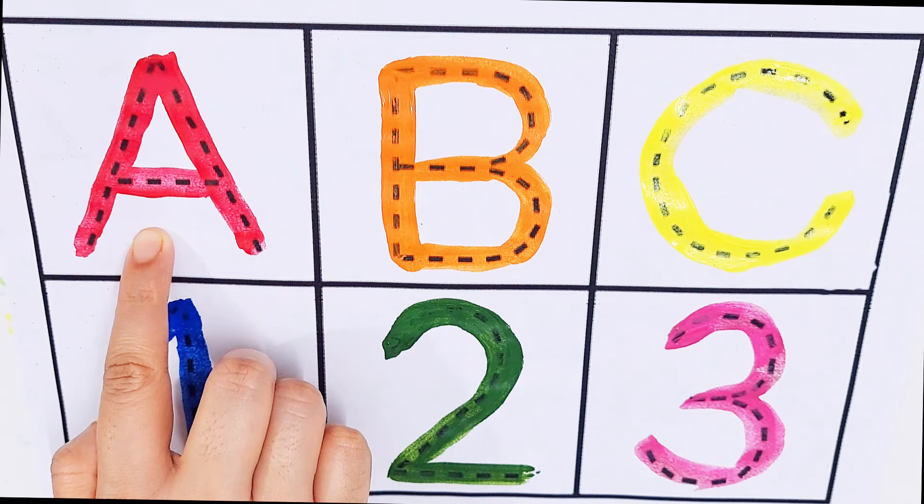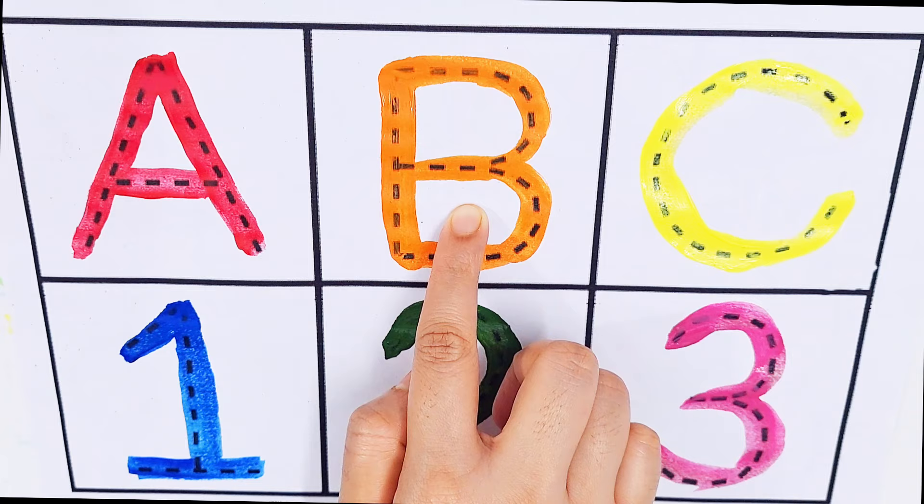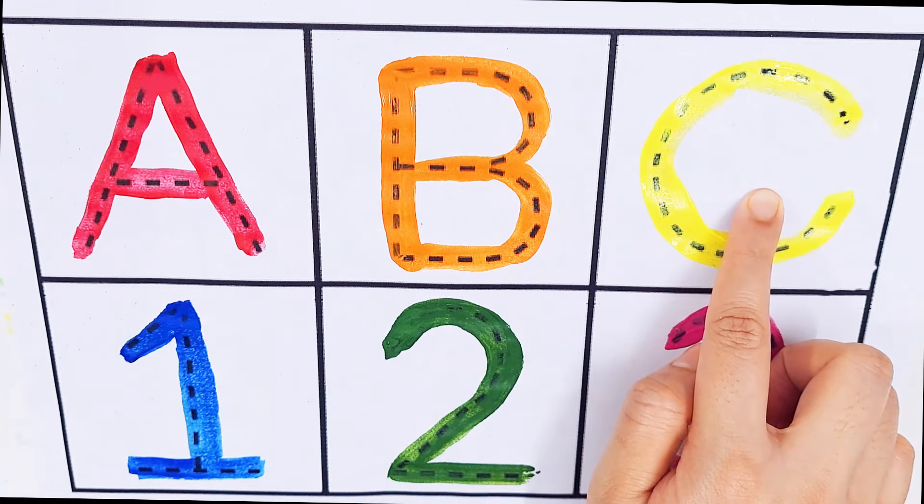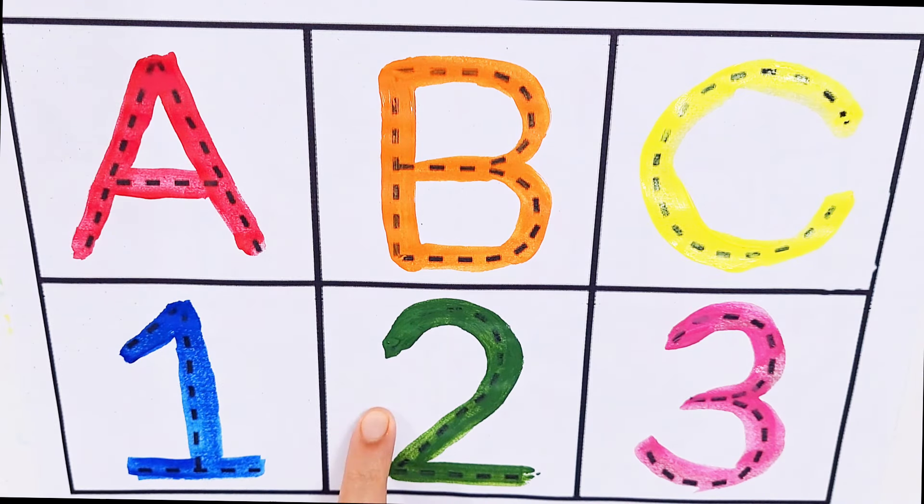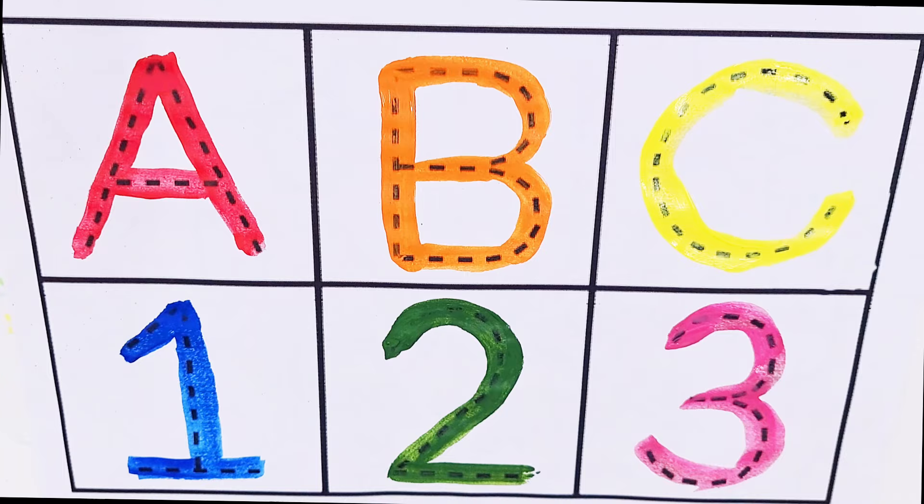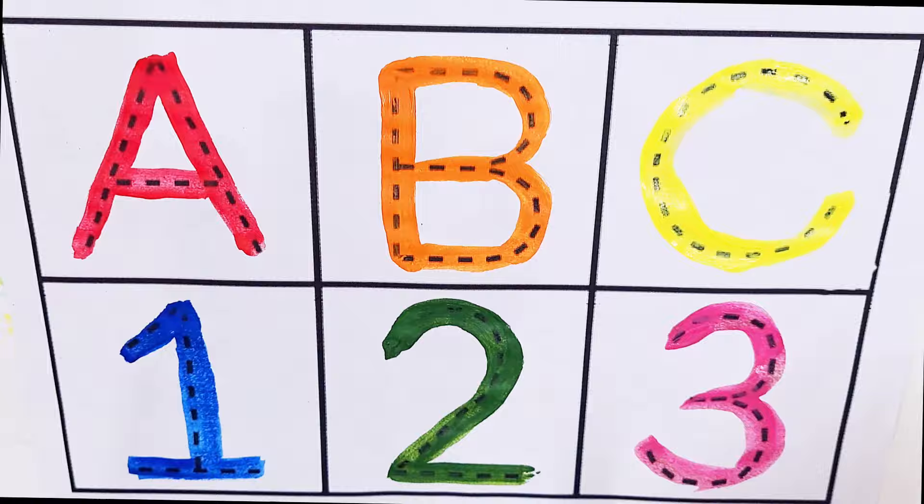A, A for apple. B, B for bus. C, C for candy. Number one, number two, number three. Thanks for watching, don't forget to like and subscribe. See you next videos, bye bye.